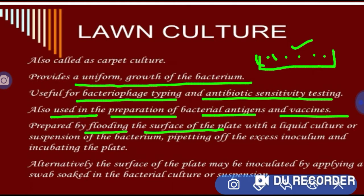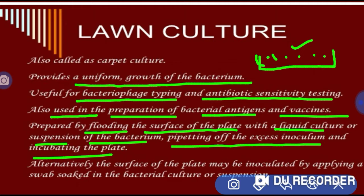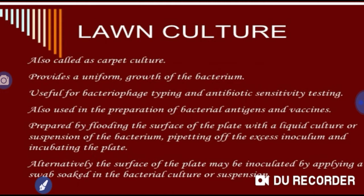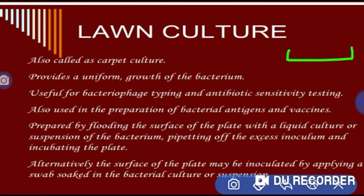Lawn culture is prepared by flooding the surface of the plate with a liquid culture or a suspension of bacteria. The surface of the plate may also be inoculated by applying a swab soaked in bacterial culture or suspension — we can use a swab or earbud to inoculate the plate.